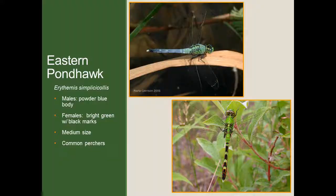Next, we have the eastern pond hawk, also a very common species in our area. These are a little bit smaller than the green darners and are definitely perchers — not as active of flyers. The males are a powdery blue color — not a very bright blue, more of a powdery drab blue. Females are actually extremely different looking from males: the female is a bright green and has black markings on the abdomen. These are medium size, perchers, and don't have any real wing markings.